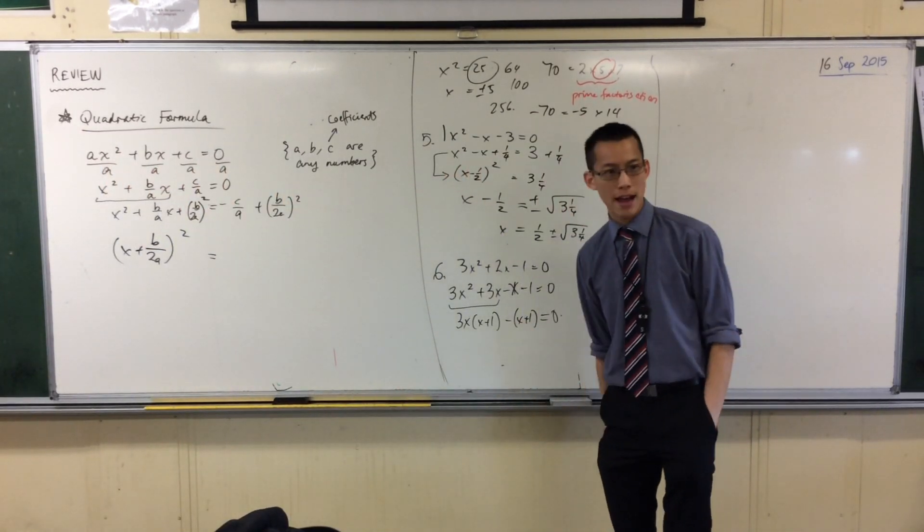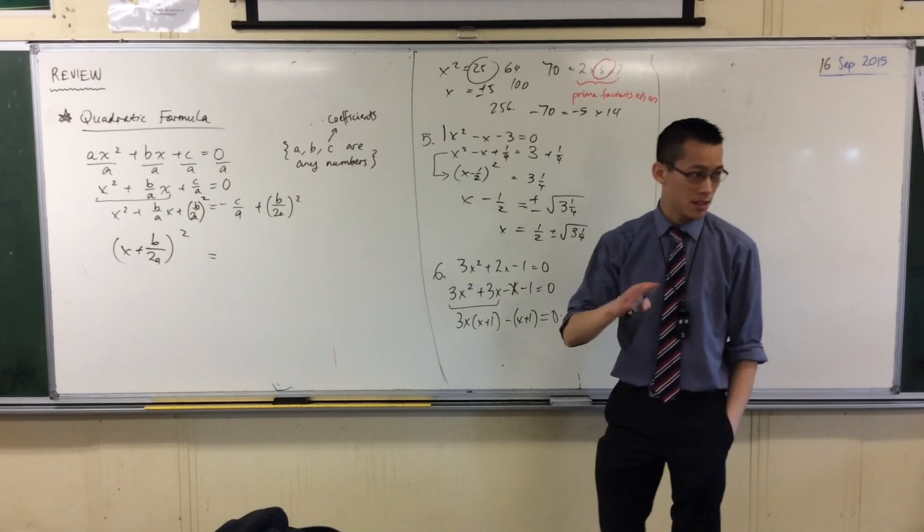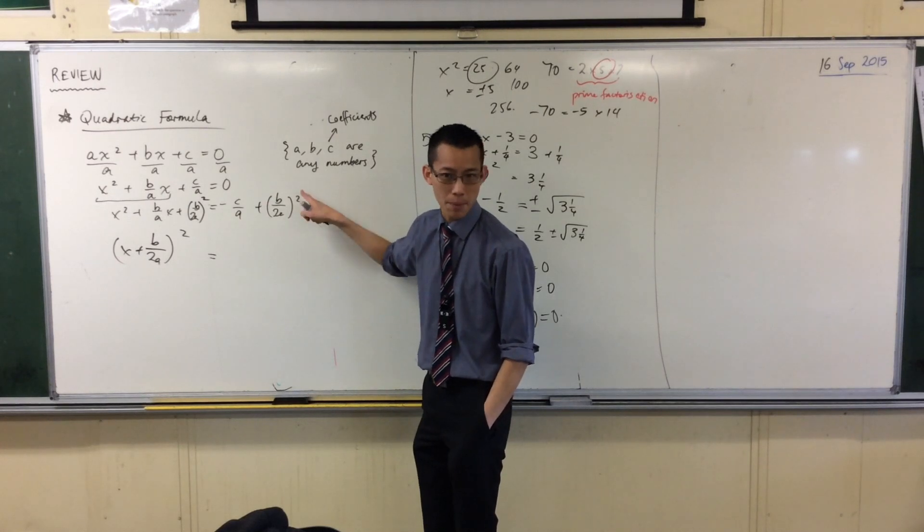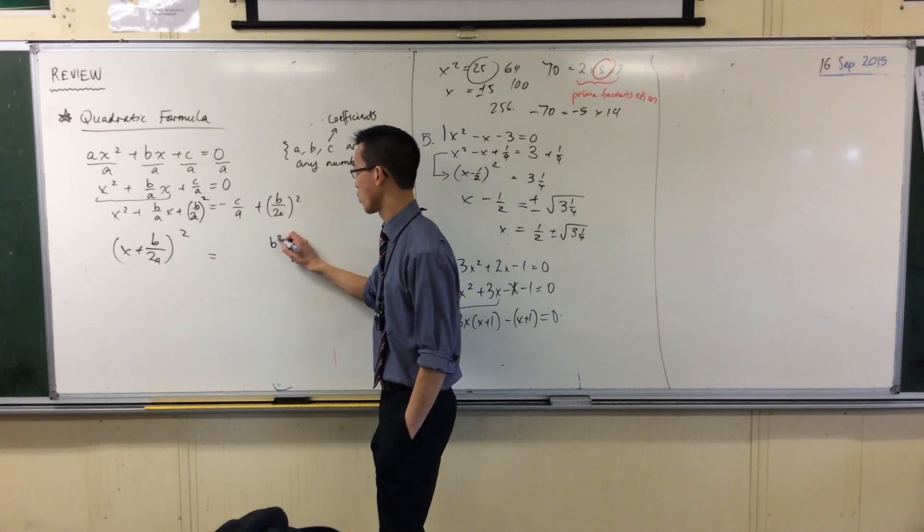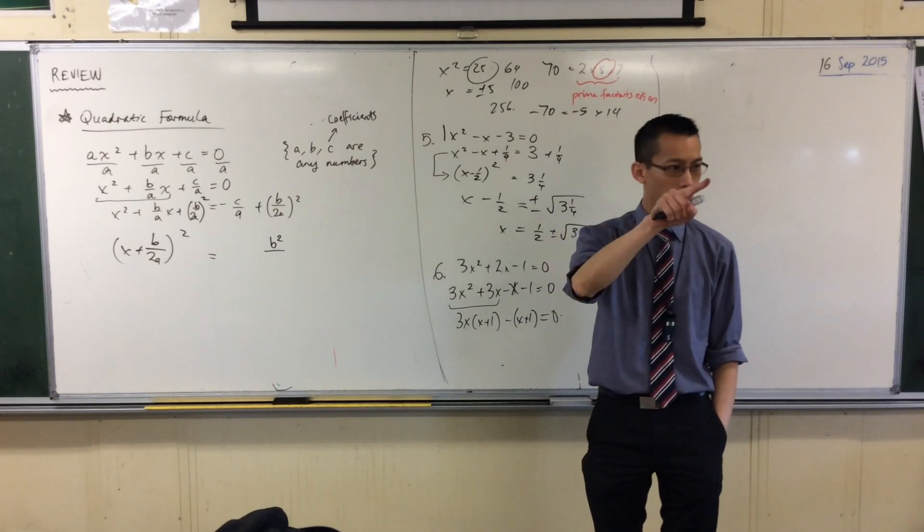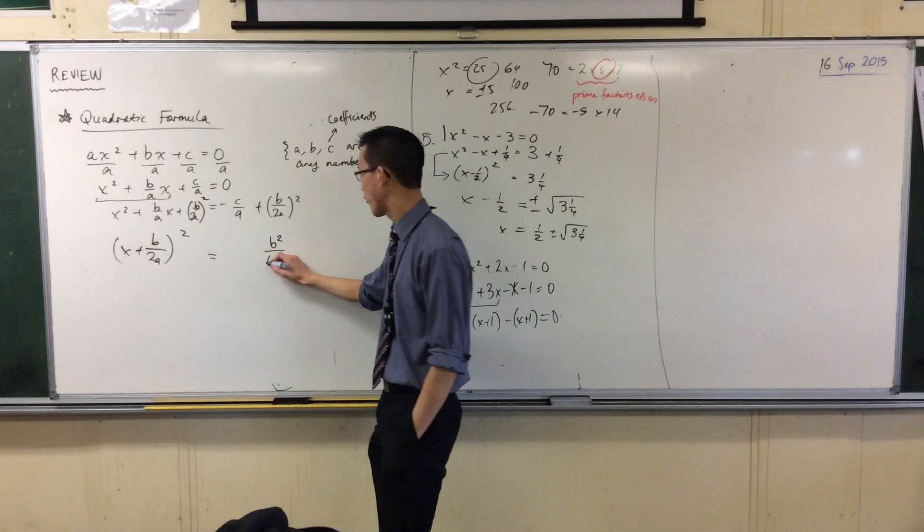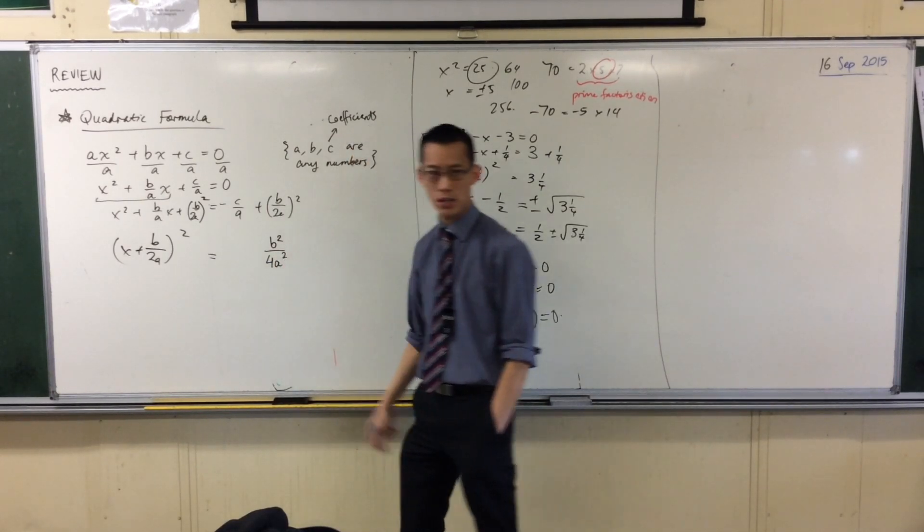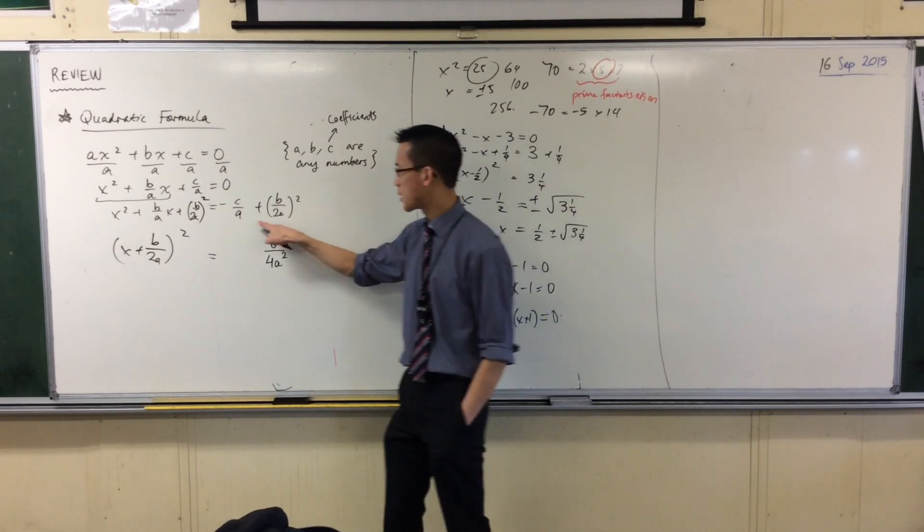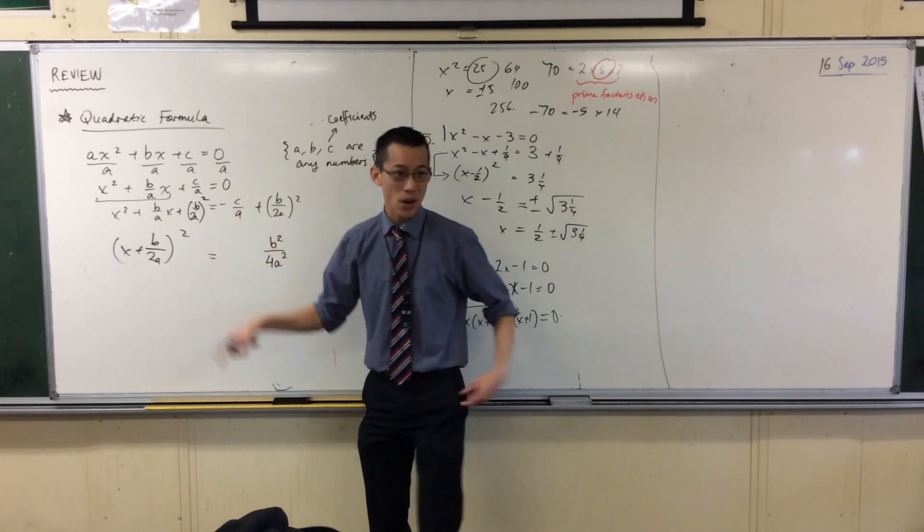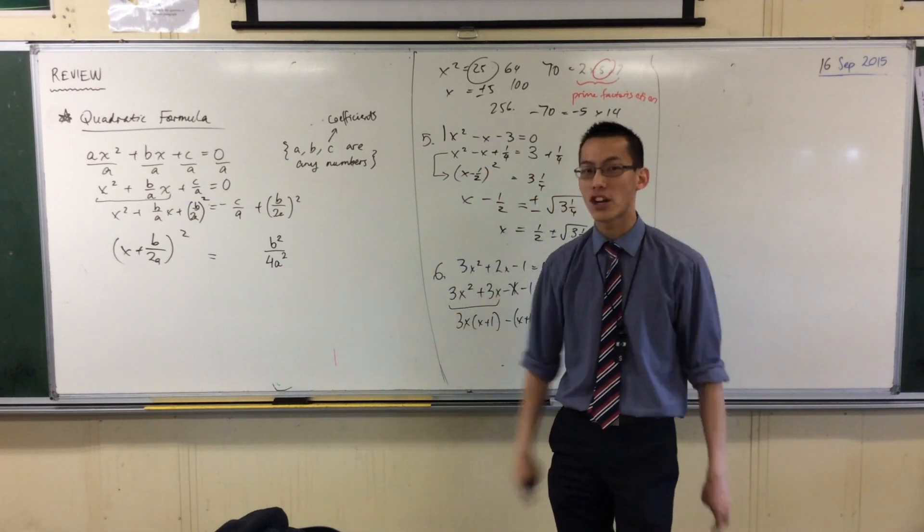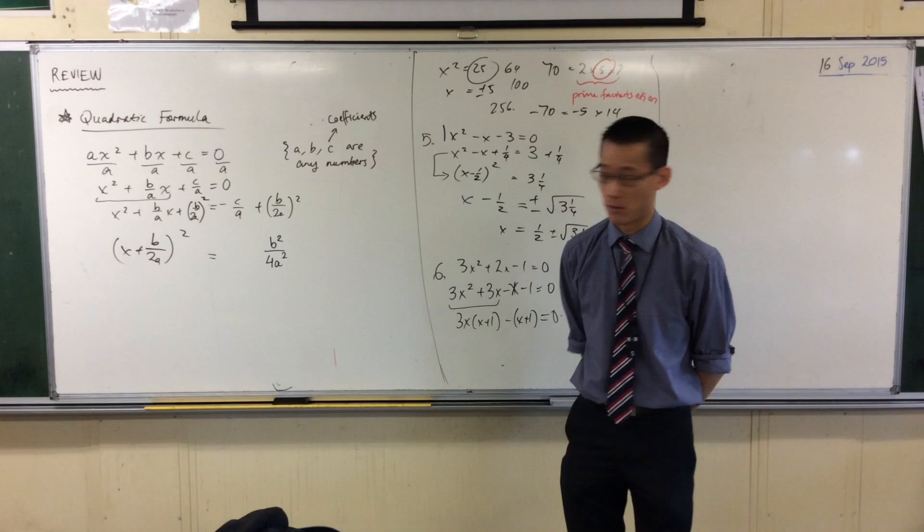What is it a perfect square of? I'll give you a clue. It starts with an X. Shock hard, right? Okay? Look, they're all pluses, so this must be a plus, right? And what's this guy going to be here? It's going to be B on 2A, right? Because when I expand this guy, it's going to become B on 2A squared. You see that? How that turns into that? Okay? So I've got my perfect square factorized over there on the left. On the right, I've got a pair of fractions, okay? So I want to simplify this a little bit.